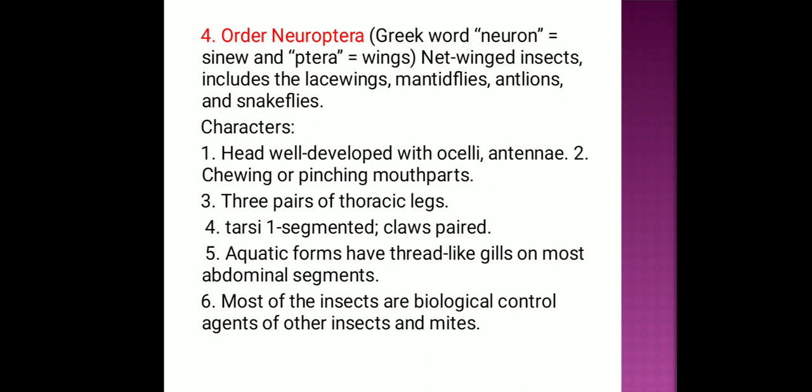Order Neuroptera: more than 5,000 species present worldwide. Examples include lacewings and antlions. Character features: moderate to rather large soft-bodied insects with two pairs of large, very similar wings. Most insects in this order are biologically used as control agents of insects and mites.